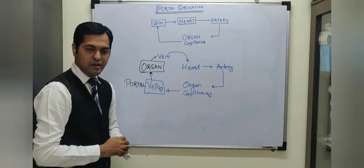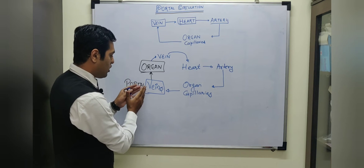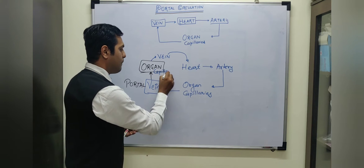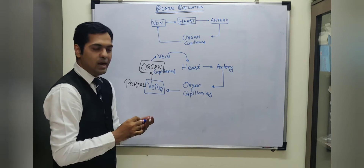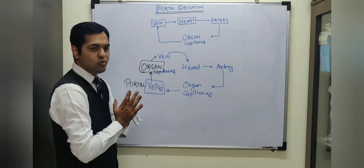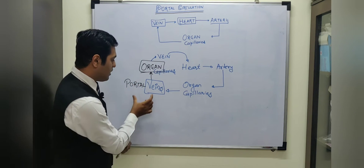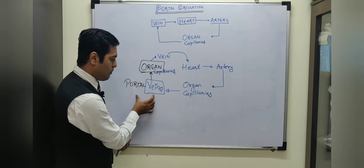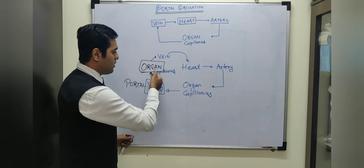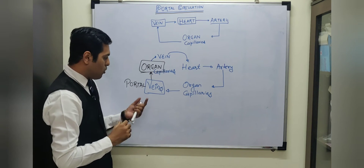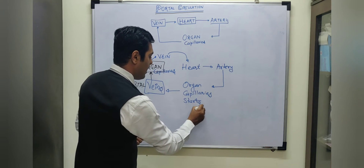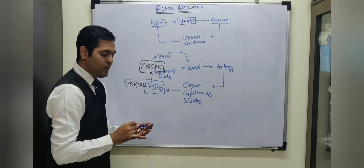Now understand the second definition of a portal vein. Once the portal vein reaches the organ, again inside the organ it is going to divide into capillaries, because this organ is also composed of various cells. So understand this: before the portal vein came into existence, there was origination of capillaries, and after the portal vein, the blood vessel that forms is also capillaries. So a portal vein is the one which starts as well as ends as capillaries.